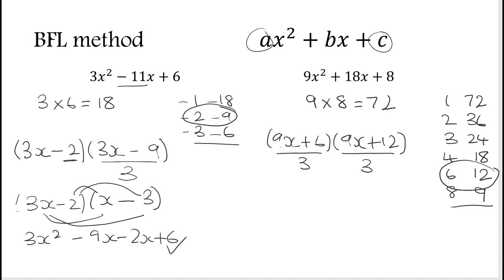So 9x divided by 3 is 3x, plus 6 divided by 3 is 2. 9x divided by 3 is 3x, plus 12 divided by 3 is 4. And then don't forget to check: 3x times 3x is 9x squared, 3x times 4 is 12x, 2 times 3x is 6x, 2 times 4 is 8. And that's right.